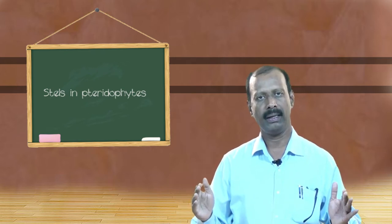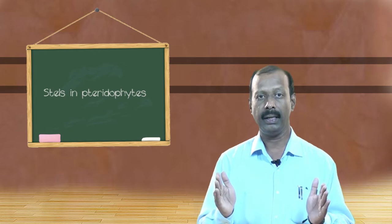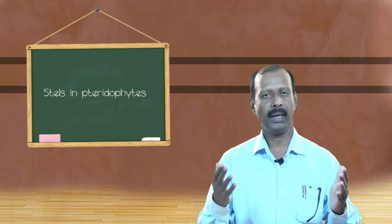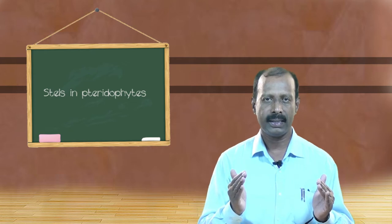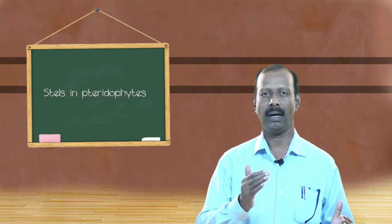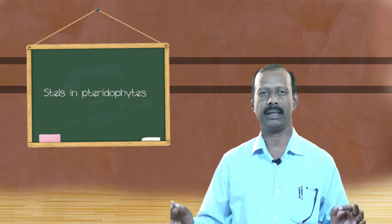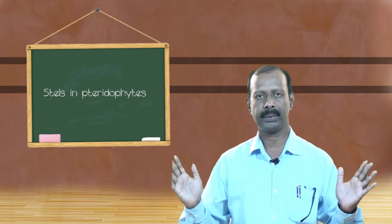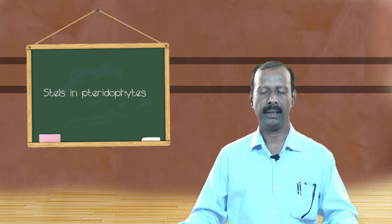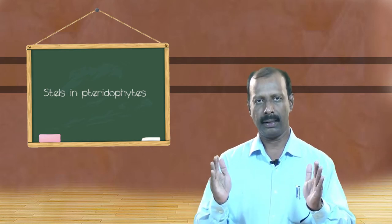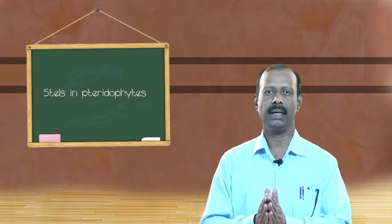A solenostele is also a siphonostele, but it is the stele with leaf gap. Now you may ask, what is leaf gap? Leaf gap is nothing but a parenchymatous depression found almost opposite to the leaf traces. They are invisible when we take the section, but whenever the leaf gaps are present, usually we can see a disconnection in the vascular ring. That means a pith with central leaf gap as well as the pith region is called solenostele.